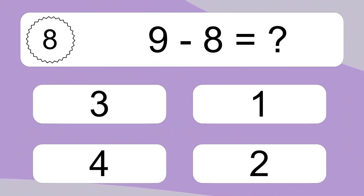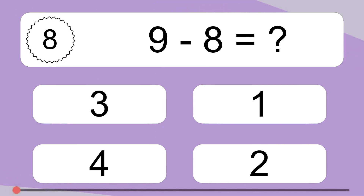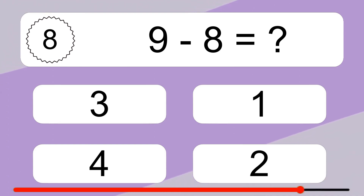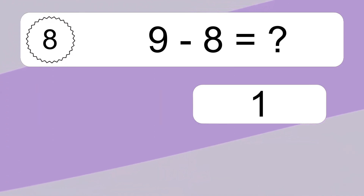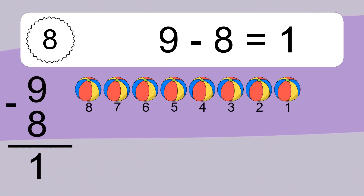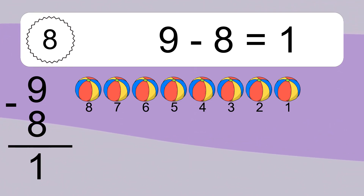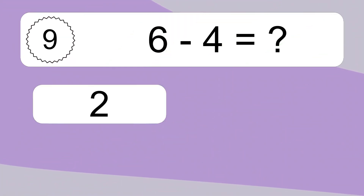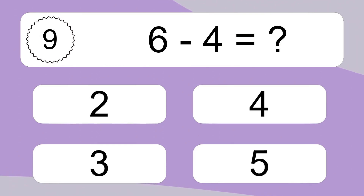9 minus 8 equals what? 9 minus 8 equals 1. Let's count it: 8, 7, 6, 5, 4, 3, 2, 1.